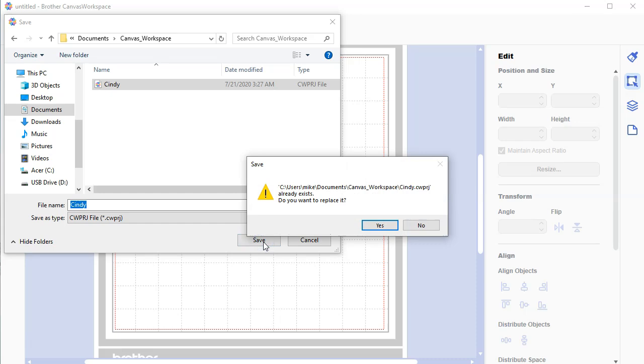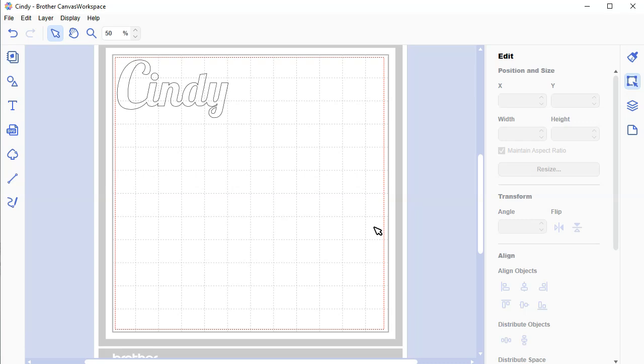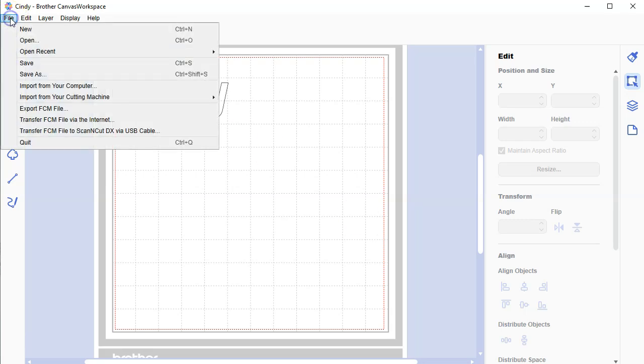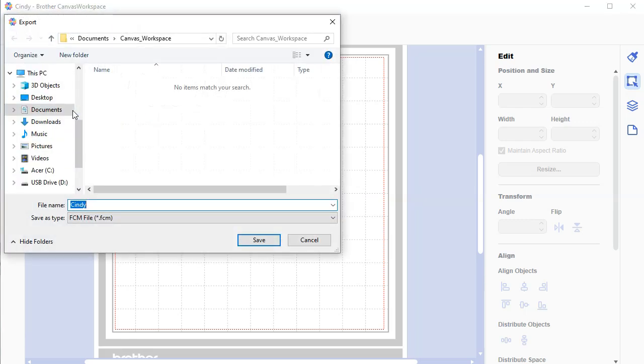So now that it's saved on my computer, again, it was not necessary, I could have saved it straight to the USB drive. We're going to now export it, export the file. So this is what's called a cutting file. It's going to cut along the black lines. We're going to go file and we're going to say export. We're going to go to export FCM file. And now it's the same process as when I saved the file before. But instead of my documents canvas workspace, I'm going to go to my USB drive, which is down the bottom. And again, I'm going to keep the same name, Cindy, name it whatever you want. And we're going to click on save.